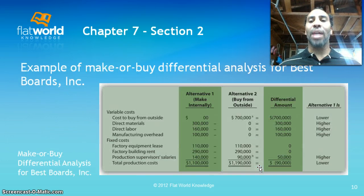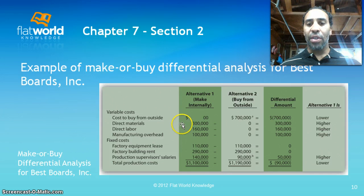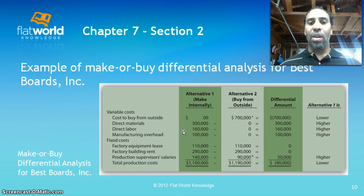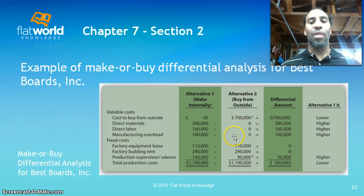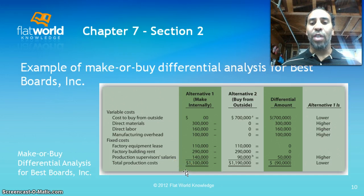Here's the make or buy differential analysis example for Best Boards. Alternative one — make internally: cost to buy from outside is zero, direct materials is $300,000, direct labor is $160,000, manufacturing overhead is $100,000. Fixed costs include factory equipment lease at $110,000, building rent at $290,000, and production supervisor salary at $140,000, so total production cost is $1,100,000.